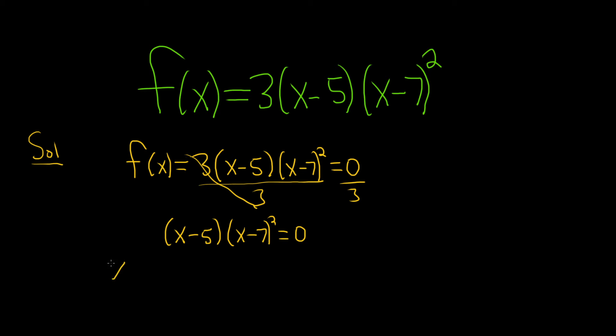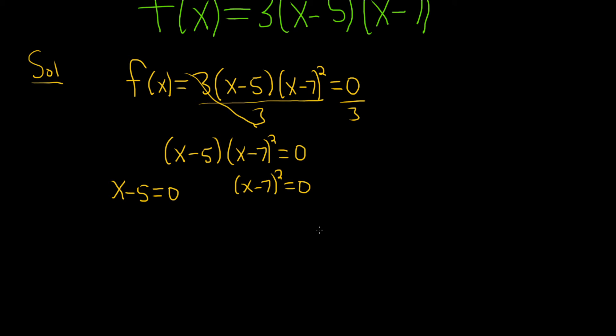Then you just set each piece equal to zero. x minus five equals zero, and then x minus seven squared equals zero. In the first case, you get x equals five. In the second case, you get x equals seven.